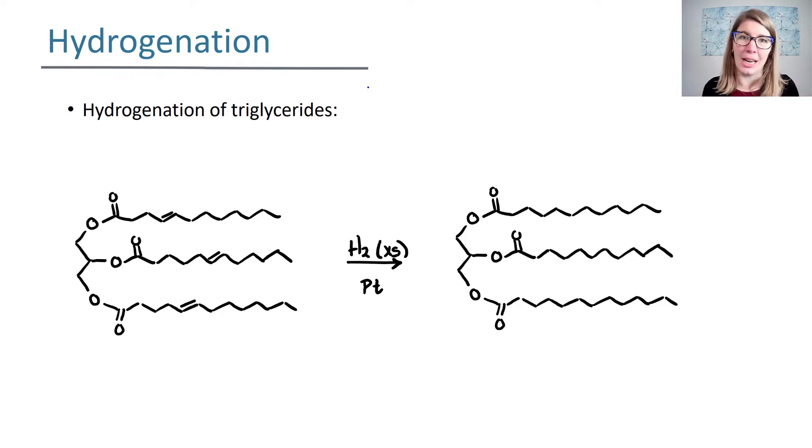If you've ever looked at the back of regular Jif peanut butter, unless they've changed the ingredients since the last time I looked, it says hydrogenated vegetable oils. Hydrogenated means they've taken that triglyceride and we've gone through the hydrogenation process that you learned about in chemistry class where you add hydrogen gas and platinum, palladium, or nickel catalyst, and it saturates that carbon-carbon bond by removing the pi bond and allowing the hydrogen to react across it to create a carbon that instead of being sp2 hybridized is now sp3 hybridized.